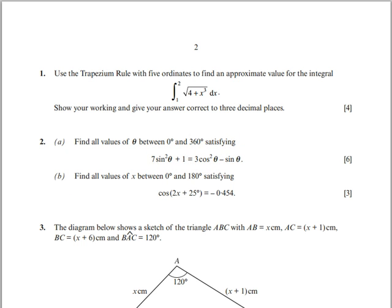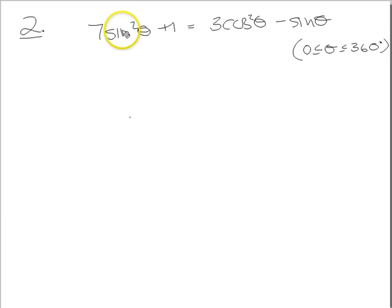So I've written that out on a notepad so that we can work on it. 7sin²θ + 1 = 3cos²θ - sinθ, and we're solving this between 0 to 360 inclusive. What we've got is an equation with sine squareds, cos squareds, and sines. Now if we remove the cos squareds by writing them as 1 - sin²θ, we'll have an equation that's a quadratic in sinθ basically. The sine is already there, so should we do that?